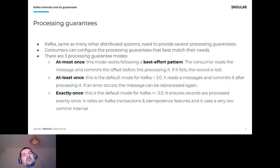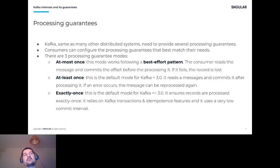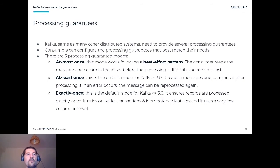From Kafka 3.0 onward, there is exactly-once semantics — which is truly remarkable for a distributed system. Having a platform that ensures records are processed exactly once in a distributed fashion is an incredible breakthrough in distributed computing. It relies strongly on transactions and idempotence features and uses a very low commit interval.